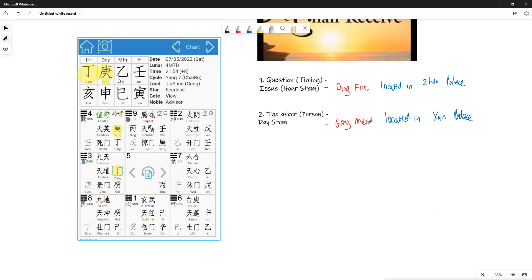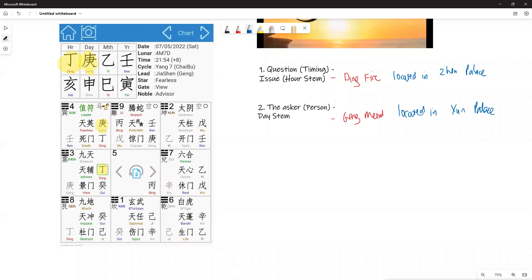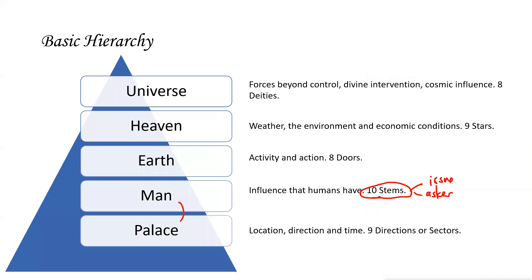Once there is a question, the chart is plotted. Once it is plotted, we need to know the stems related to it and also the location. Then you have to decide for yourself whether you need to involve earth, heaven, and the universe. In certain occasions, you don't have to — not everything comes to play. The question is whether you want to analyze at that level of complexity.